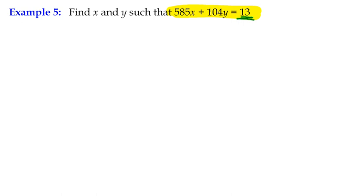So the first thing we do is we are going to run through the division algorithm. So 585 equals a certain number of 104, well it's going to be 5 lots of 104 is 520, plus 65, that's our remainder.